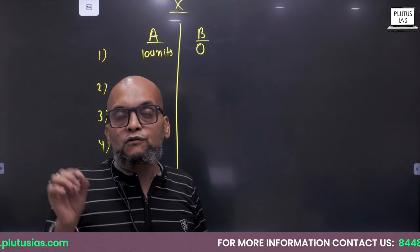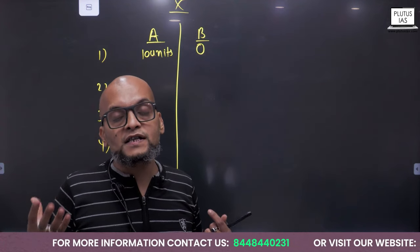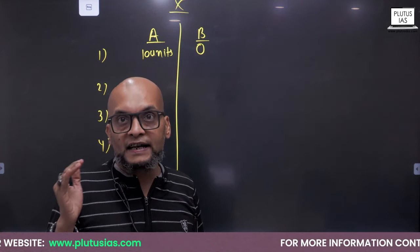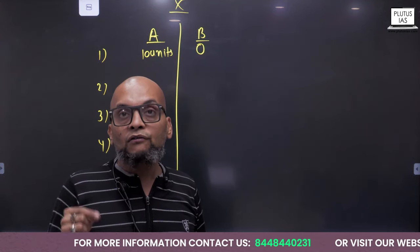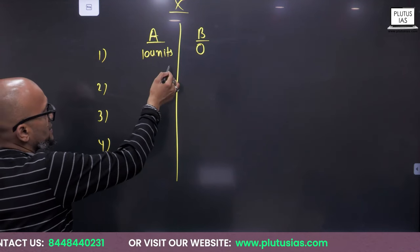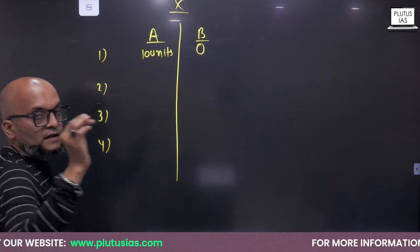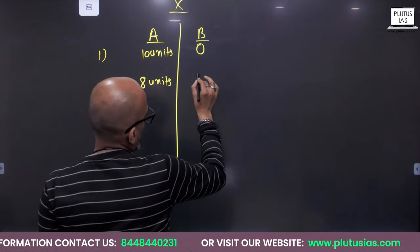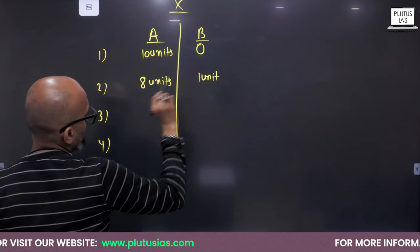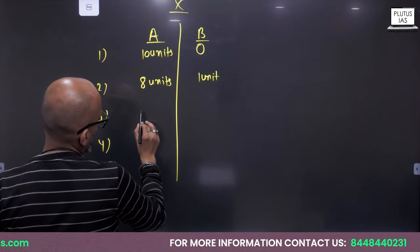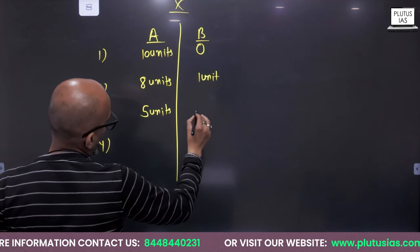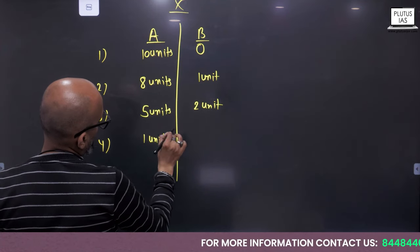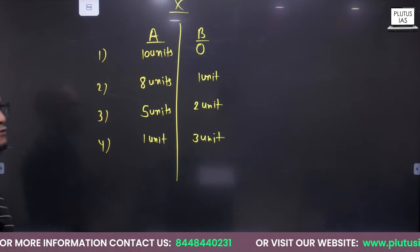If the economy deviates some resources to manufacture good B, resources available for A decrease, and so the number of units of A manufactured also decreases. Initially 10 units of A were produced; now let's say 8 units of A are produced and 1 unit of B is produced. Again, if we want to produce more units of B, more resources are sacrificed. So now 5 units of A are produced and 2 units of B. One more scenario: 1 unit of A is produced and 3 units of B are produced.